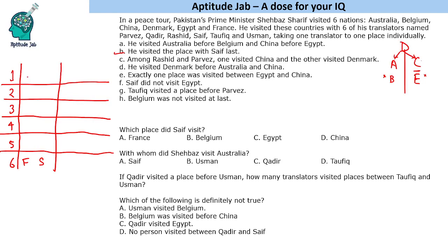Among the remaining five countries, Denmark will be first because Denmark is before Australia and China, Australia is before Belgium, and China is before Egypt. Now, since there is exactly one country between China and Egypt, we can have two possibilities: one arrangement like China, [one country], Egypt — which could be Australia or Belgium — and another arrangement where Australia comes before China with Belgium after Egypt, ending with France visited by Saif.